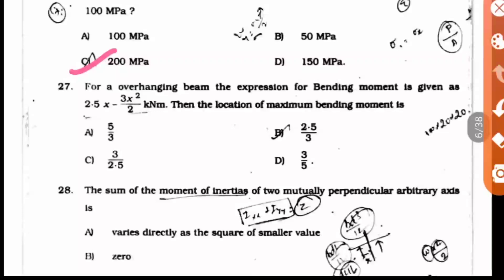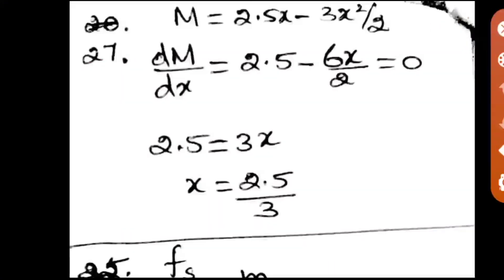Question 27: For an overhanging beam, the expression for bending moment is given as 2.5x minus 3x square by 2. The location of maximum bending moment is what? We know that when we differentiate the bending moment we get shear force, and at maximum bending moment the shear force is 0. We're going to use this concept to find the x value here.